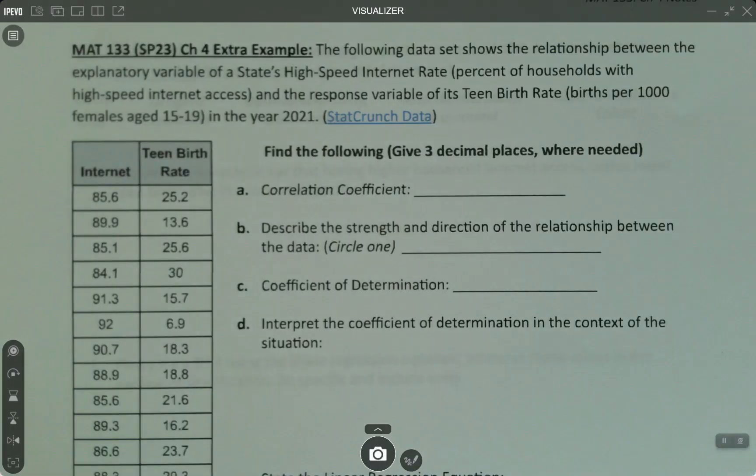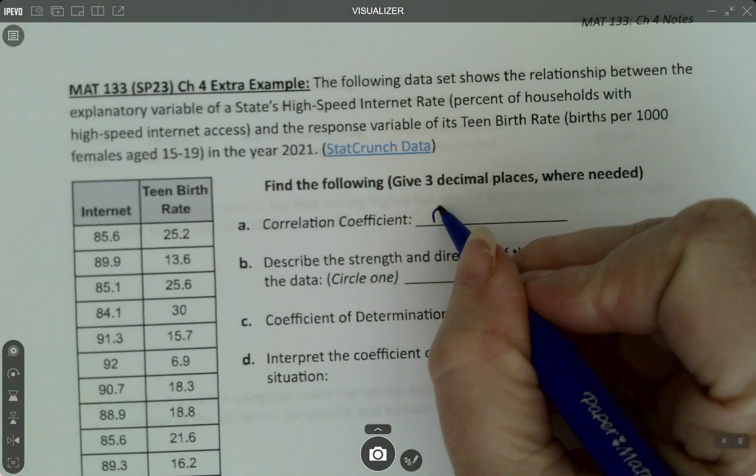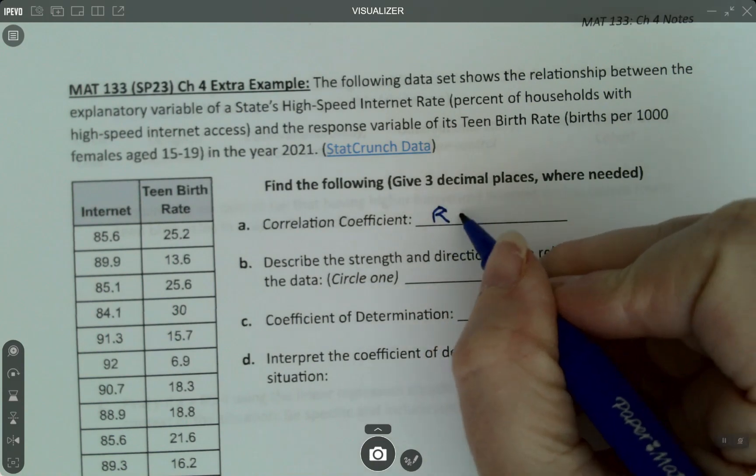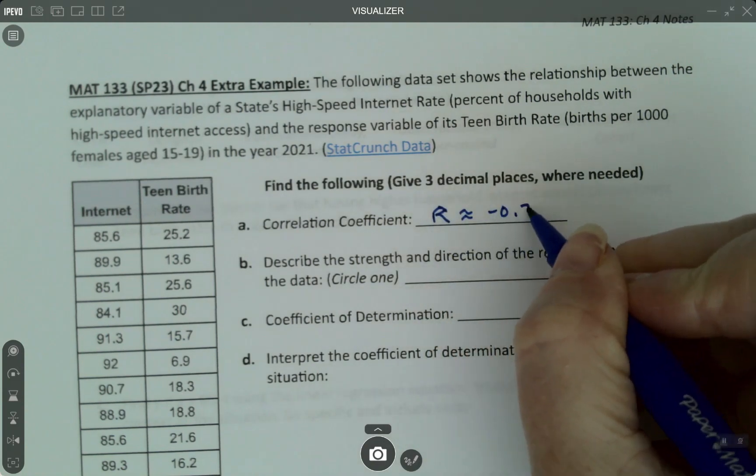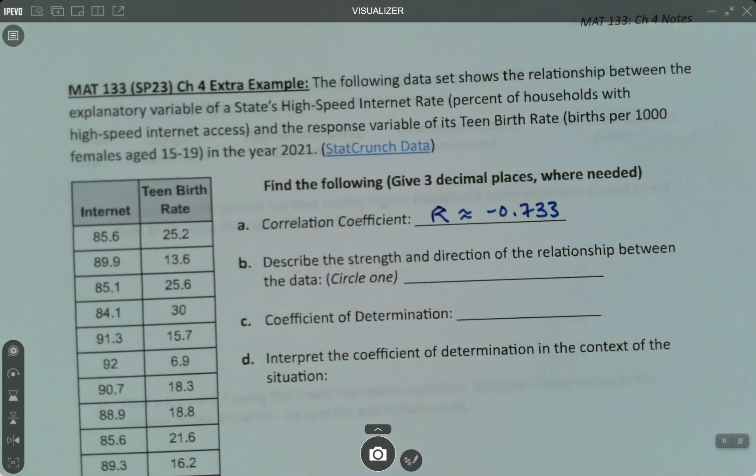So it's negative 0.733. I'm just going to use capital R. Our textbook uses lowercase r. Our computer programs use capital R. It doesn't really make a lot of difference. It's fine.